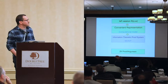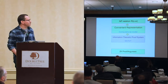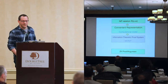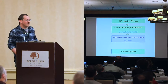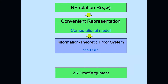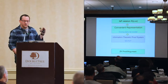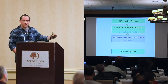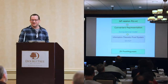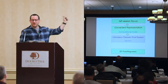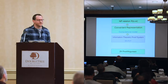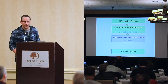The modular approach introduces an additional intermediate component: an information-theoretic proof system, or zero-knowledge PCP. 'Information-theoretic' means security properties hold against computationally unbounded parties — both soundness and zero-knowledge. These properties typically hold unconditionally and do not rely on cryptographic assumptions, though sometimes combinatorial conjectures may be used to squeeze out final efficiency gains.